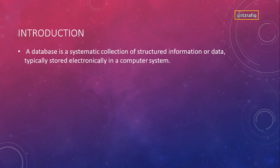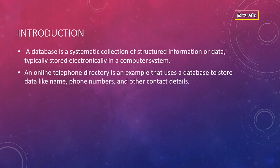Data is typically stored electronically in a computer system. For example, the voter list, the list of people in NRC, and when you are checking your results online — these are examples of electronic databases. Even in your mobile you have a contact list where you see your friend's name and phone number — this is also a database. An online telephone directory or your phone book is also an example of a database, where you get name, phone number, and email ID of your contacts.